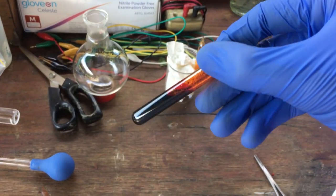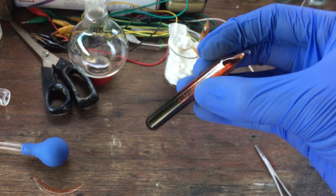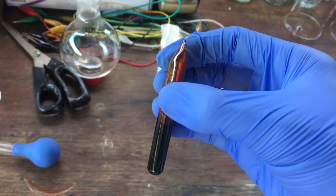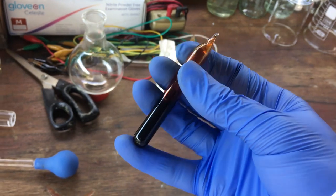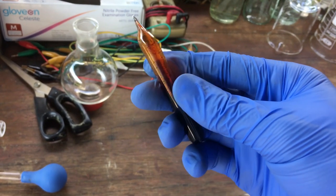But anyway, there we have it. A nice quick video about making, well, an alright ampoule of elemental bromine. See you later.